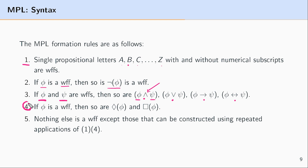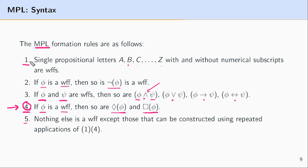Rule four is the new rule for modal propositional logic: if phi is a WFF, then you can take either the diamond or the box and place it to the left of that formula. So if phi is a WFF, then both ◇phi and □phi are WFFs as well. This is how the syntax of modal propositional logic differs from propositional logic. The last rule simply states that nothing else is a WFF except for those things that can be constructed using these four rules.